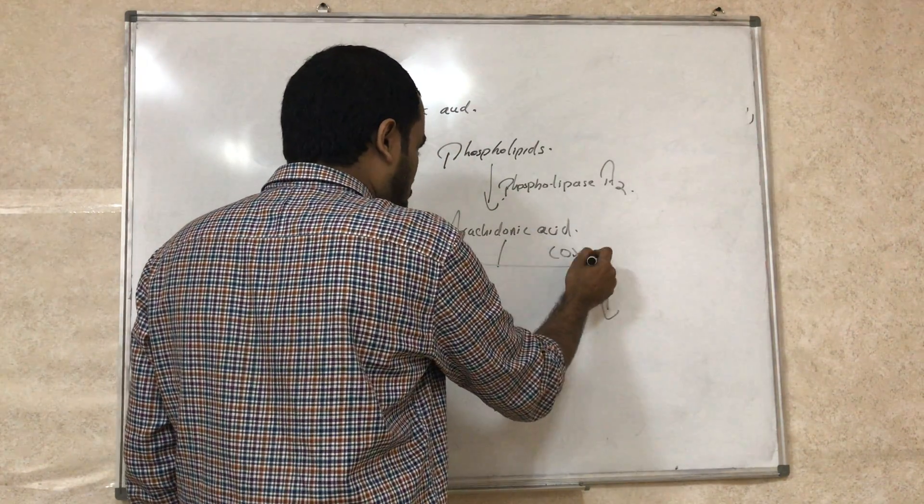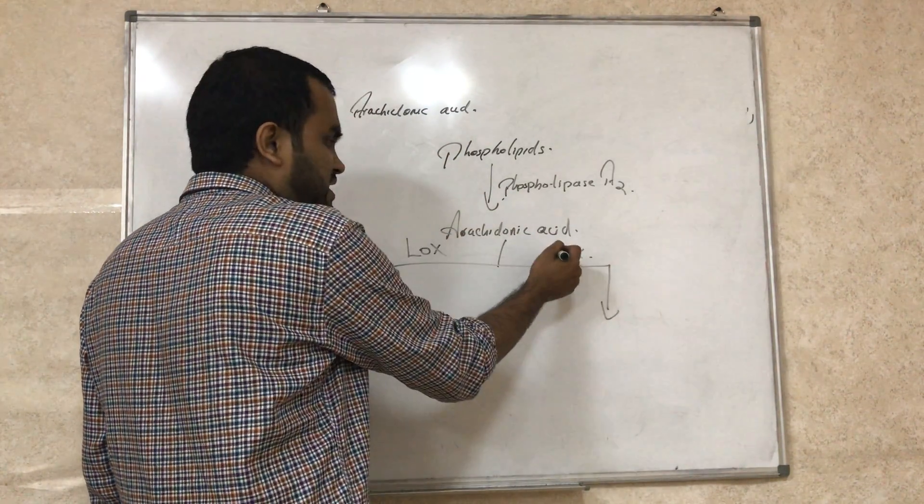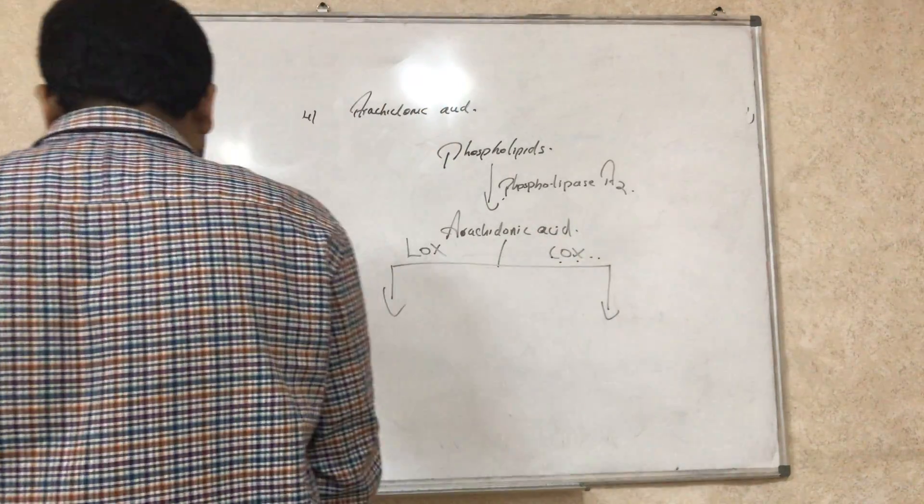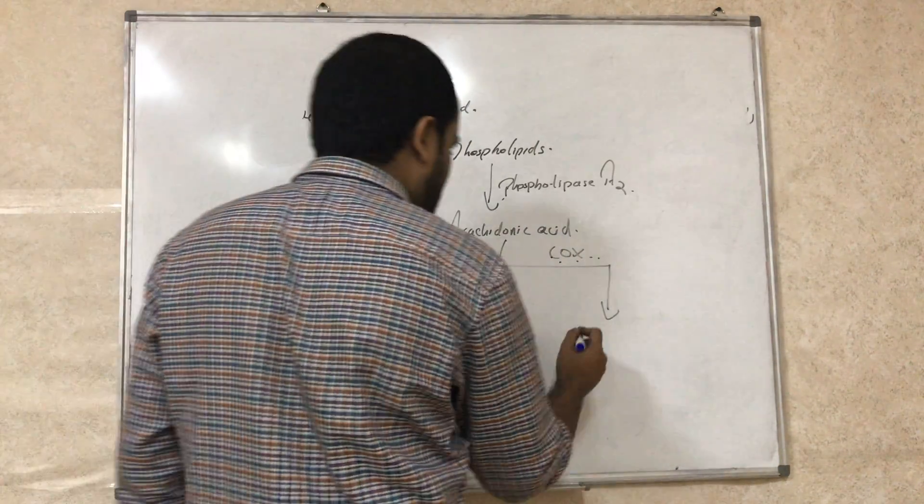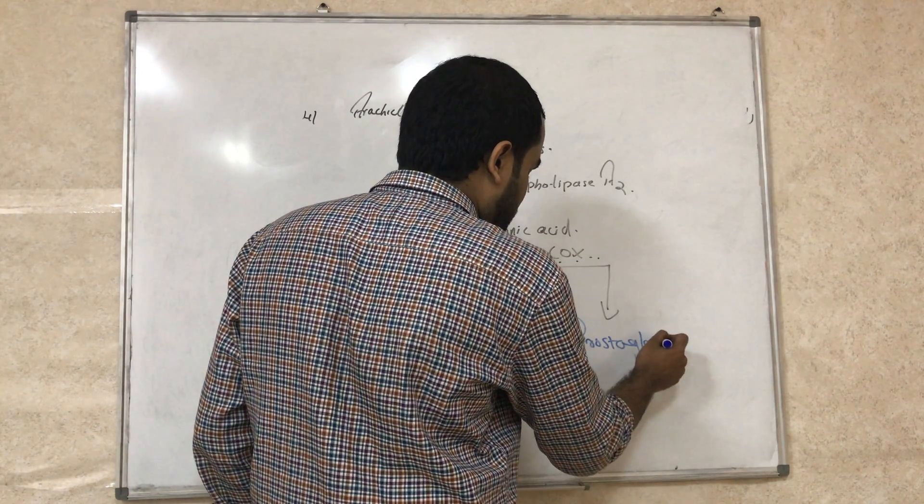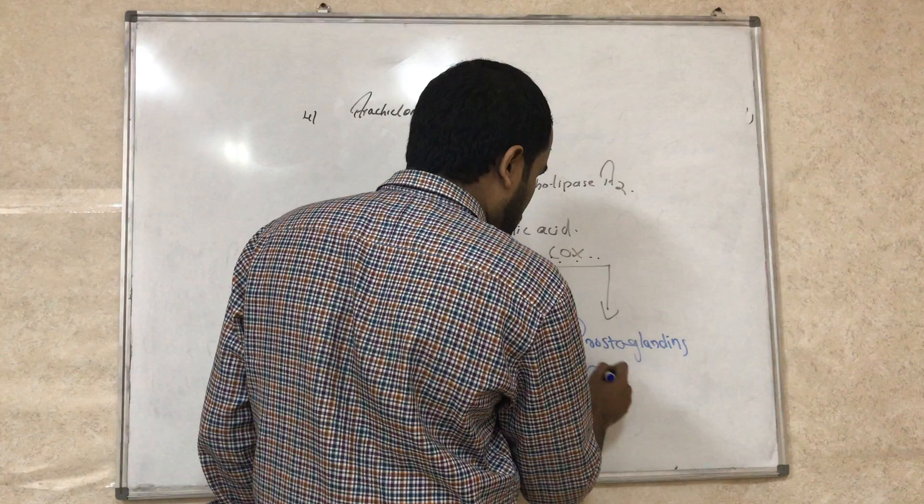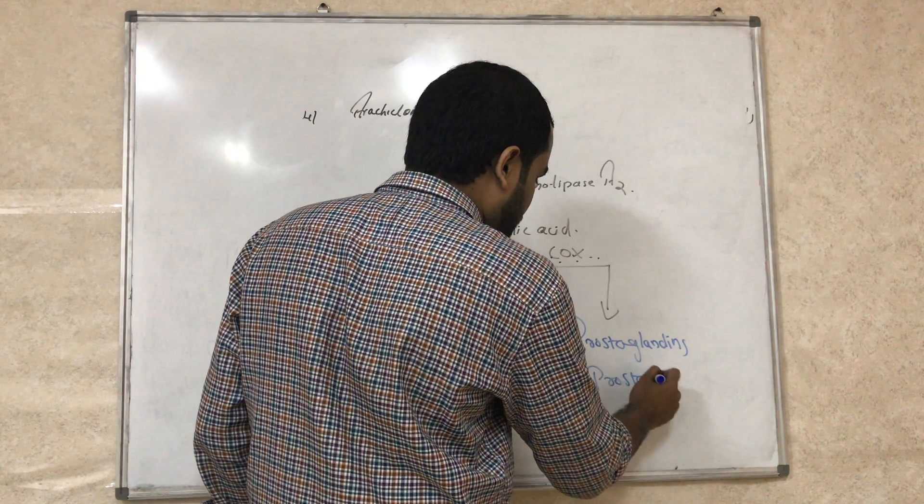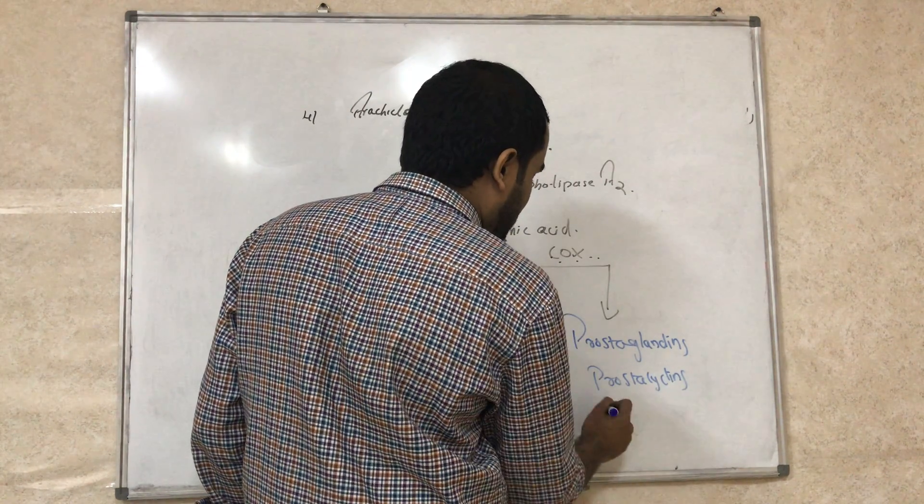COX or LOX. COX means cyclooxygenase, LOX means lipoxygenase. COX produces prostaglandin, prostacyclin, and thromboxane.